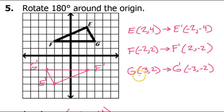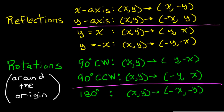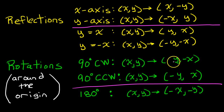That's it for number five. For number 6, we are rotating 90 degrees clockwise around the origin. We decided that 90 degrees clockwise is going to be y, opposite of x.